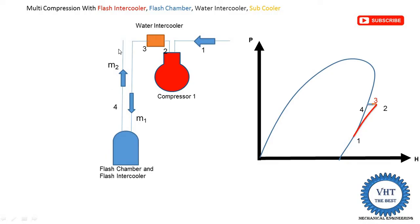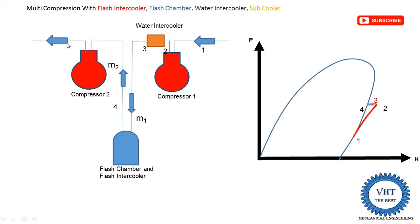This condition of refrigerant is supplied into the high pressure compressor, compressor two. In the high pressure compressor, the pressure of the refrigerant is increased from intermediate pressure to the high pressure or condenser pressure. The outlet point is 5, and the process 4 to 5 is isentropic compression. From point 4, we follow the constant entropy line up to the high pressure to get point number 5.